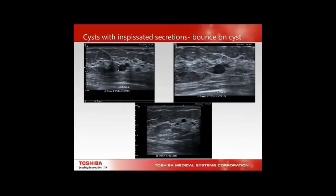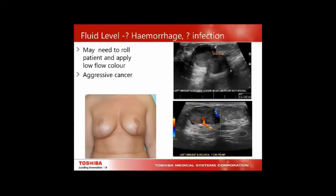Here we have inspissated secretions; we bounce on these cysts and rotate to see if there's mobile product or speculations. This lady had a breast reduction six months before and presented with redness under the scar — it looked like an abscess. But we rolled the patient, applied low flow settings, and found a strong vascular stalk — this was a very invasive inflammatory breast cancer.